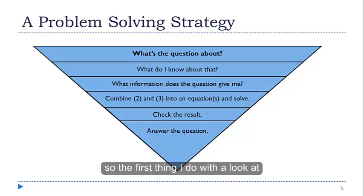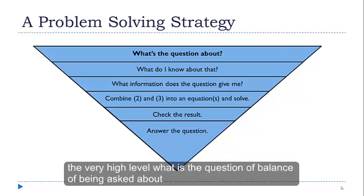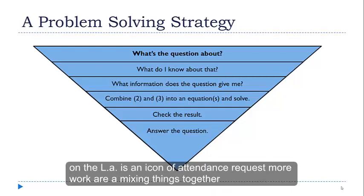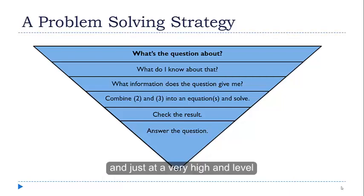So the first thing I do is I look at it just from a very high level. What is the question about? Am I being asked about averages? Is this a geometry situation when we're talking about objects and areas or perimeters and distances? Is it a chemistry question where we're mixing things together? Just at a very high level, what am I being asked to think about here?